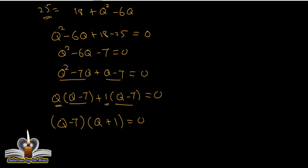So Q minus 7 equals 0, we get Q equals 7. And Q plus 1 equals 0, we get Q equals minus 1. So there are two values of Q: 7 and minus 1.